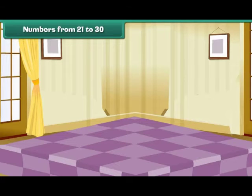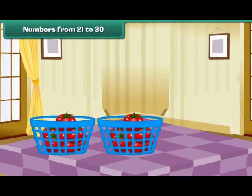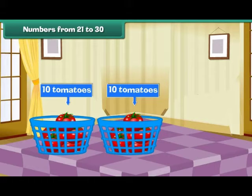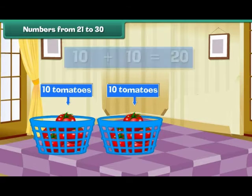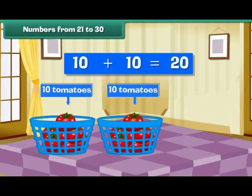Numbers from 21 to 30. Look at these two baskets of ripe tomatoes. Each basket contains ten tomatoes. Therefore, we have two groups of ten, which means we have 20 tomatoes.